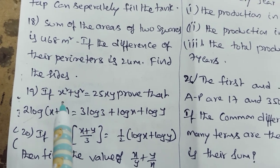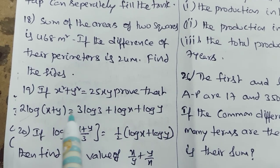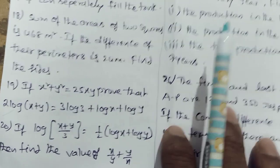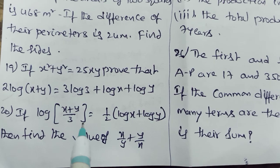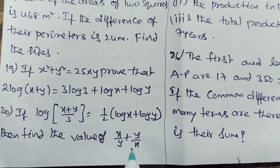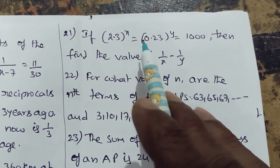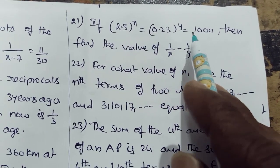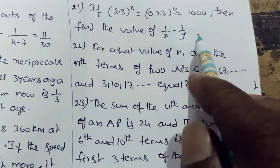If x square plus y square equal to 25xy, prove that 2 log of x plus y is equal to 3 log 3 plus log x plus log y. If log of x plus y by 3 is equal to 1 by 2 of log x plus log y, then find the value of x by y plus y by x. If 2.3 whole power x equal to 0.23 whole power y is equal to 1000, then find the value of 1 by x minus 1 by y.